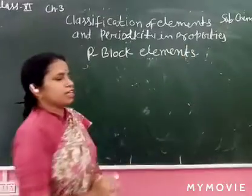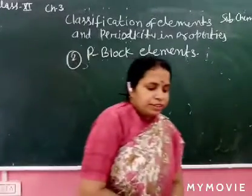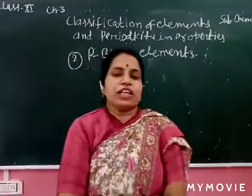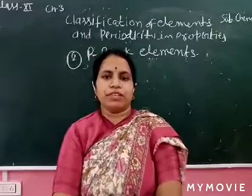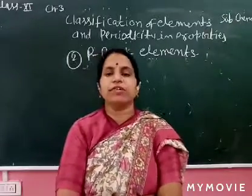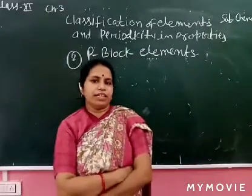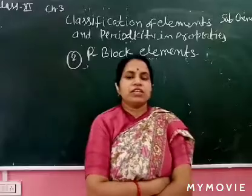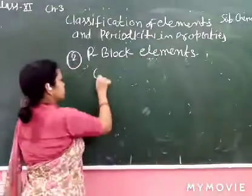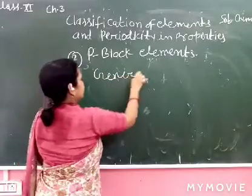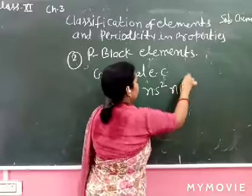What is the definition of P block elements? The elements in which the last electron enters the P orbital are called P block elements. Their general electronic configuration is ns² np^(1-6).